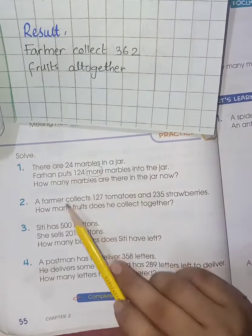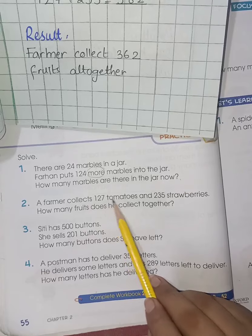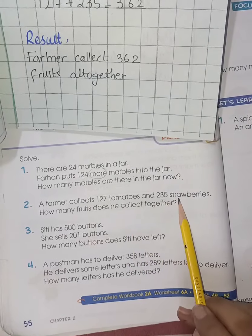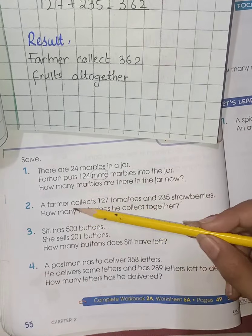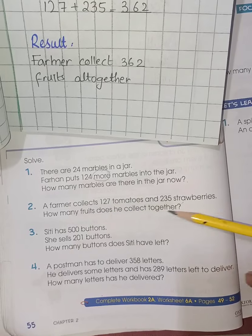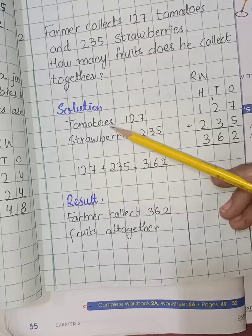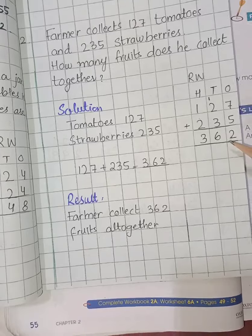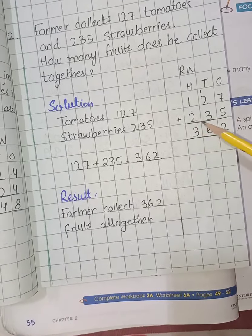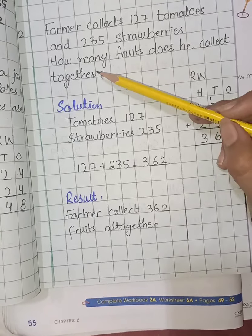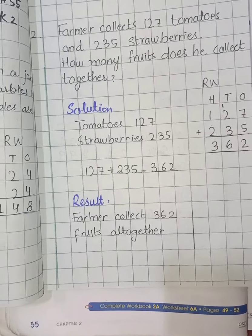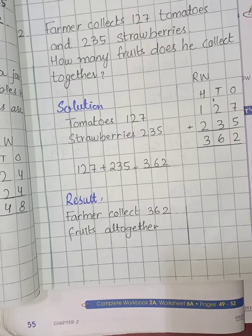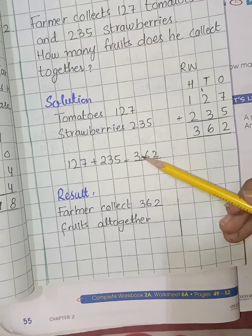Moving on to the next word problem from the book: a farmer collects 127 tomatoes and 235 strawberries. How many fruits does he collect altogether? Here is the solution — 127 tomatoes and 235 strawberries. We are going to make the rough work: 127 plus 235, because the keyword is 'all together', which indicates addition.